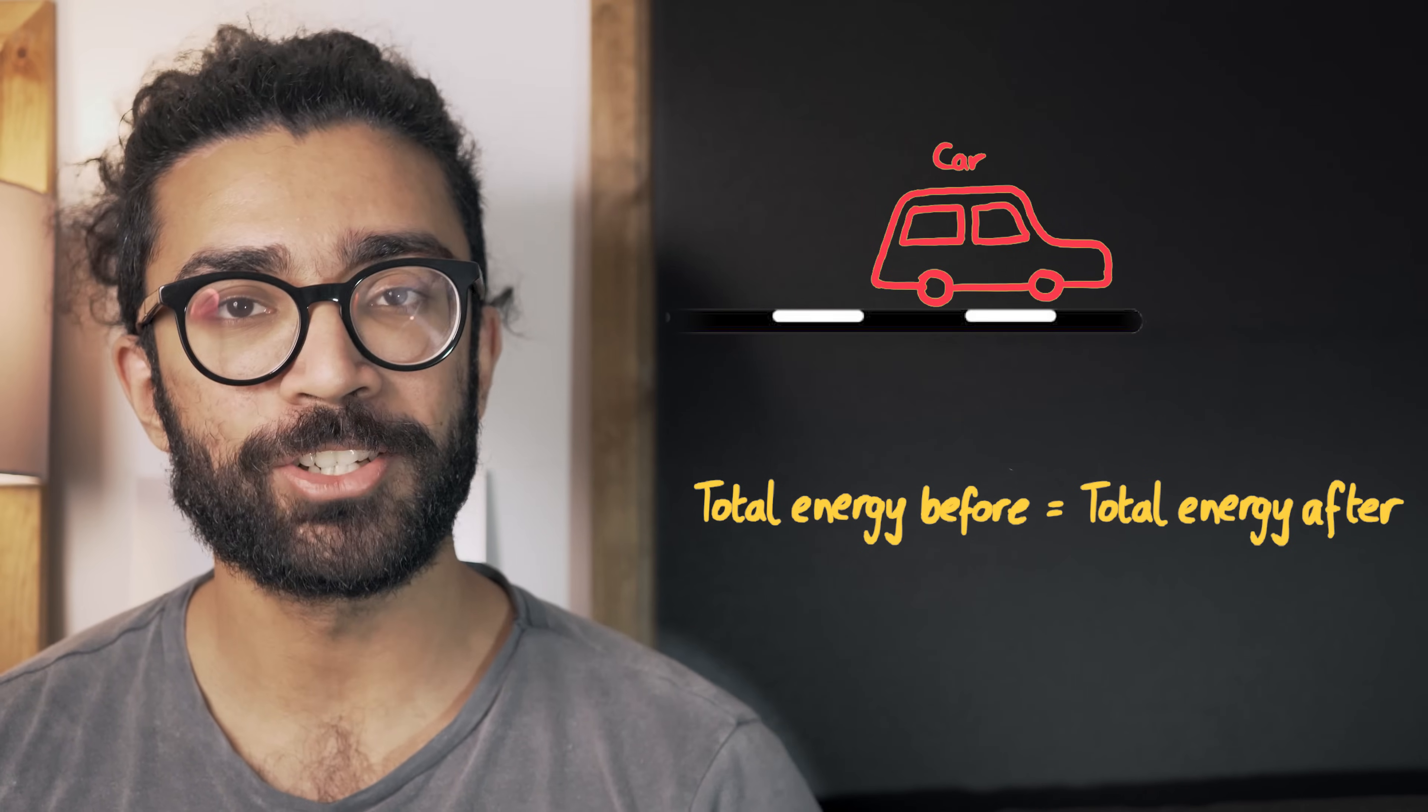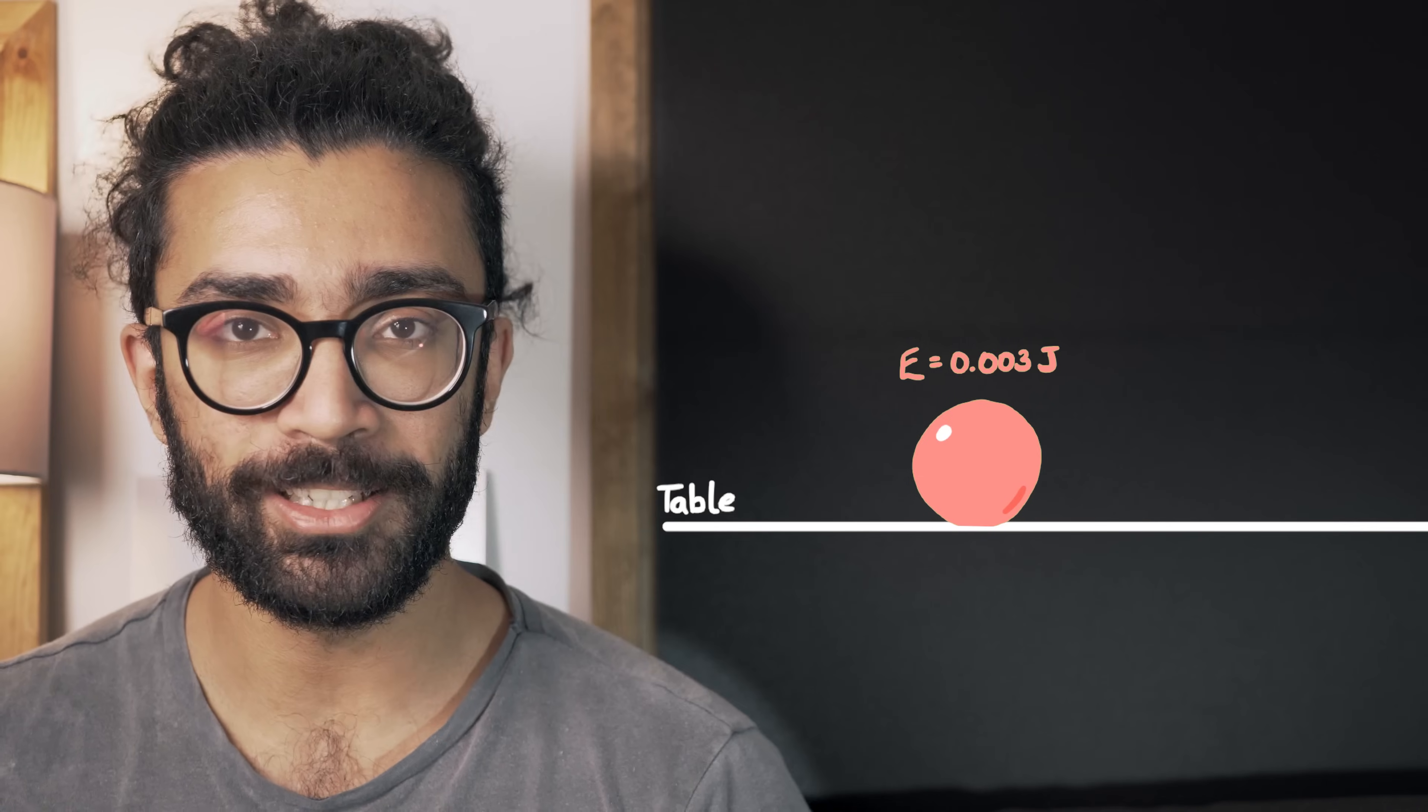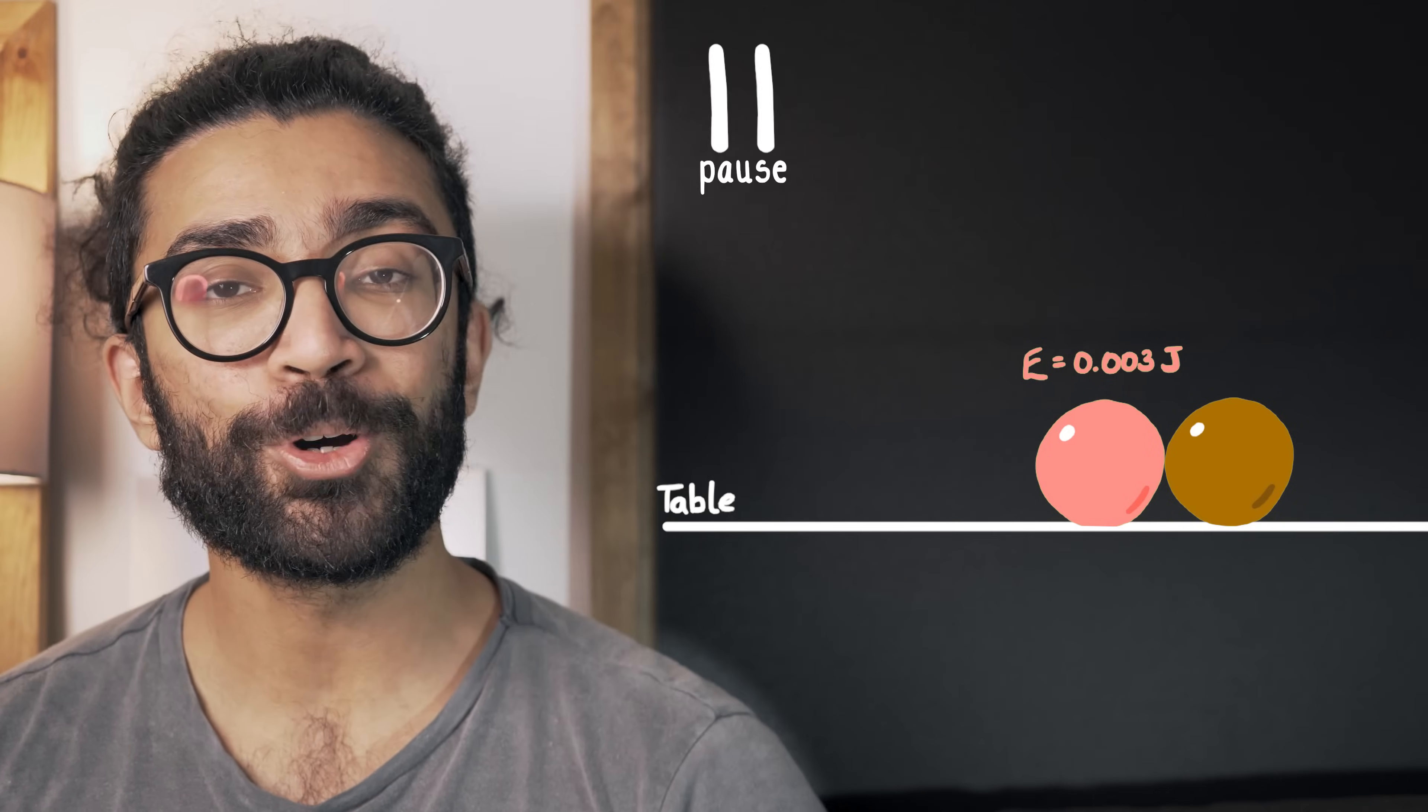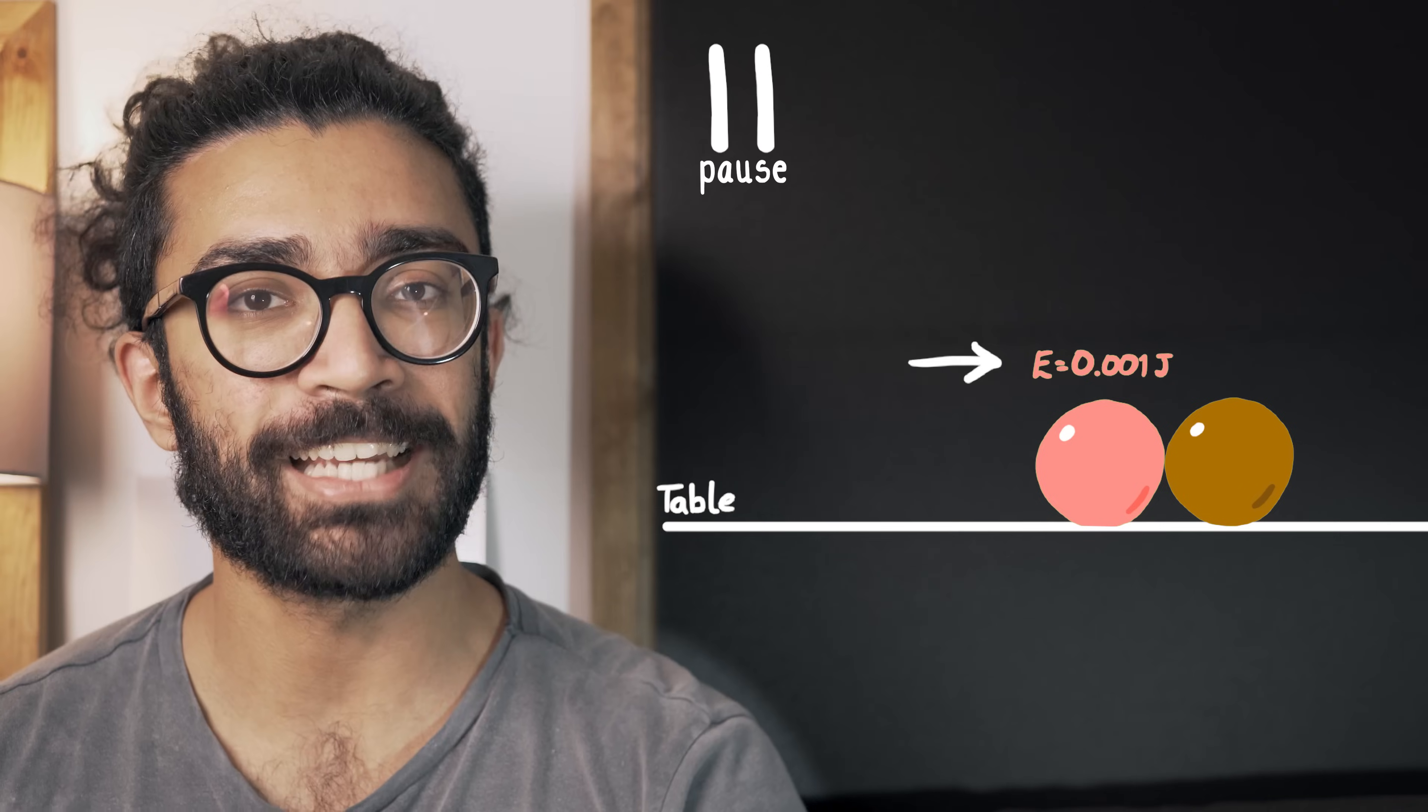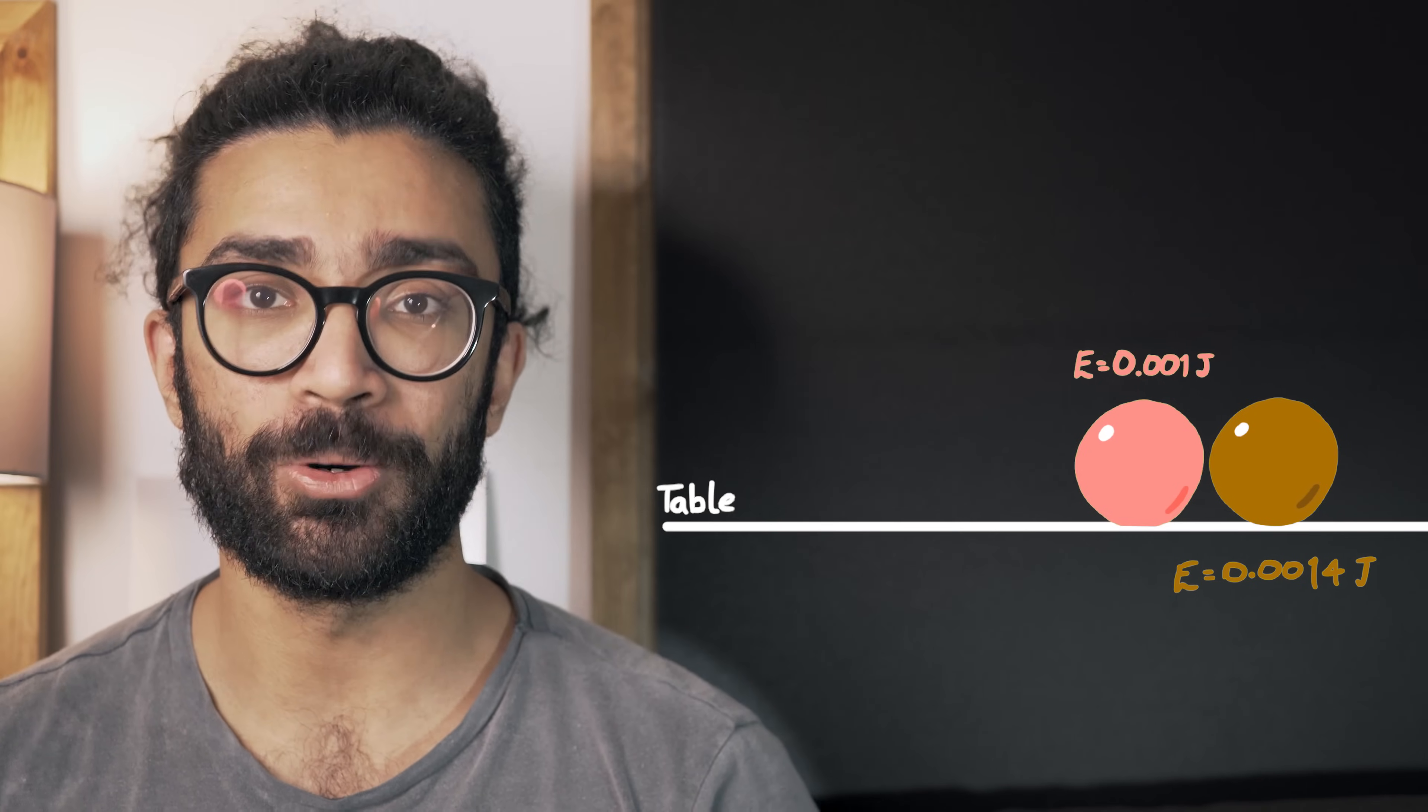As a basic example, let's imagine a snooker ball or a pool ball moving along a table and it has an energy of 0.003 joules. But then something changes. This ball collides with another ball placed here. At this point, lots of energy transfers occur. So for example, the first ball loses kinetic energy because it was moving at a particular speed before and it's now moving slower. So its kinetic energy is lower than it was before.